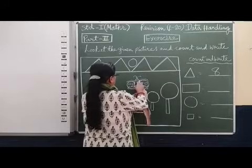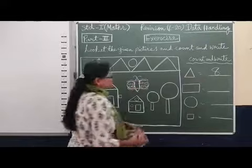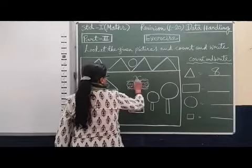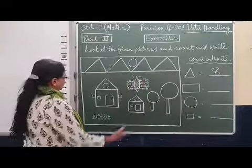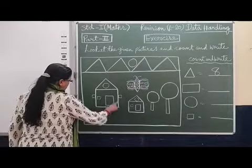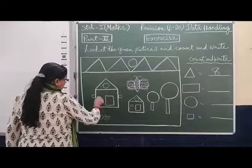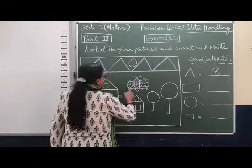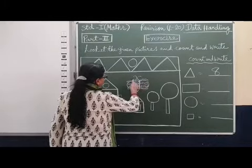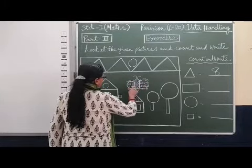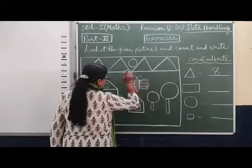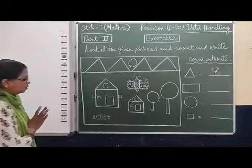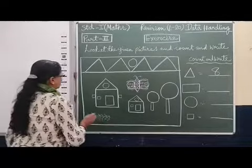Continuing to count rectangles through all pictures: one, two, three, four, then two butterflies making five, six, seven, eight, nine, ten, eleven, twelve, thirteen, fourteen, fifteen. We have no more rectangles. So 15 rectangles are there.